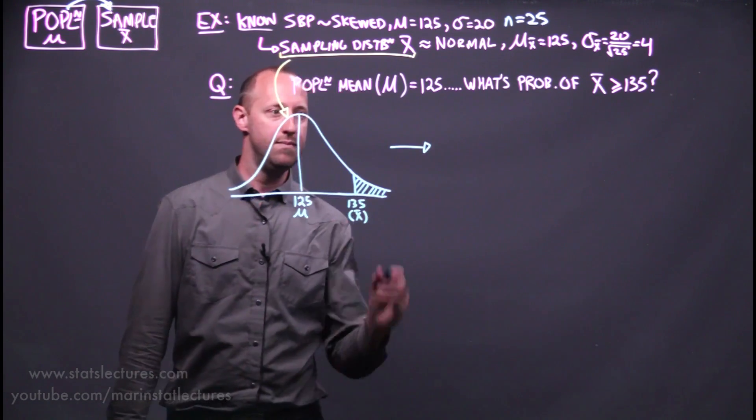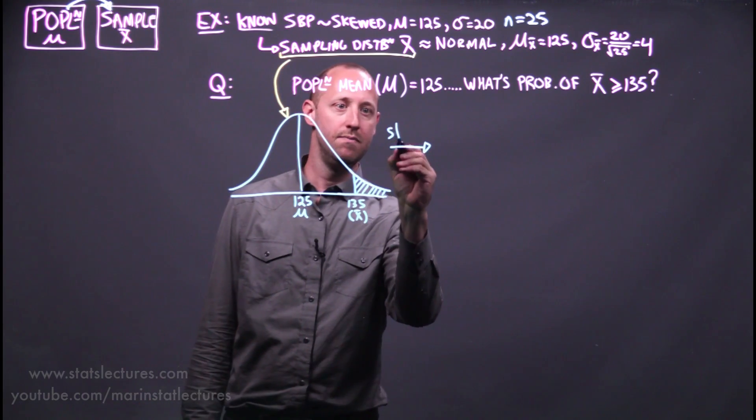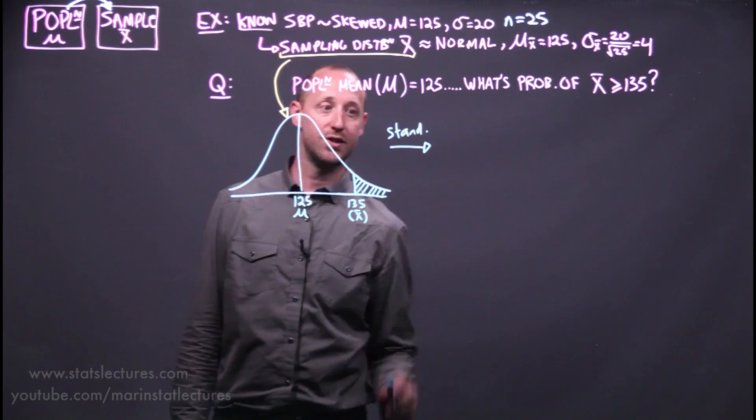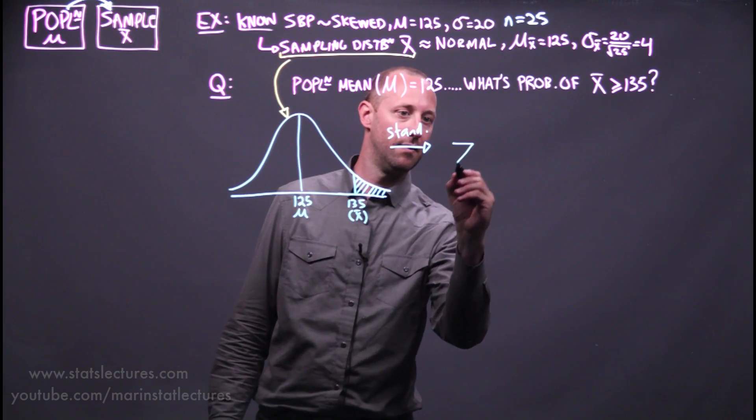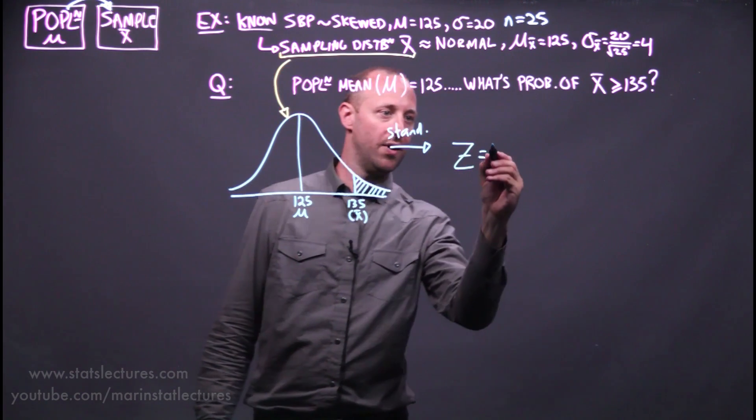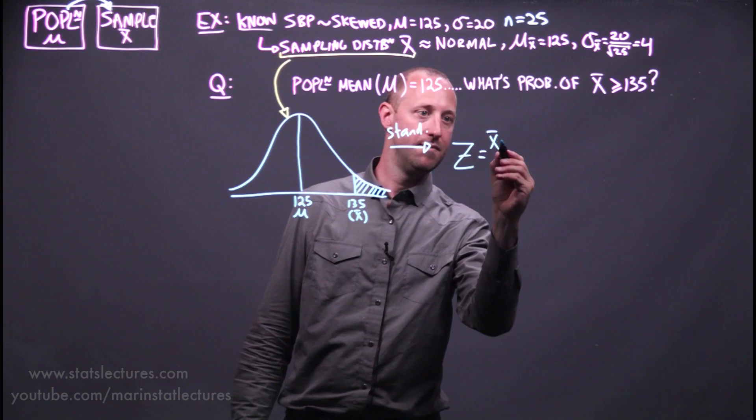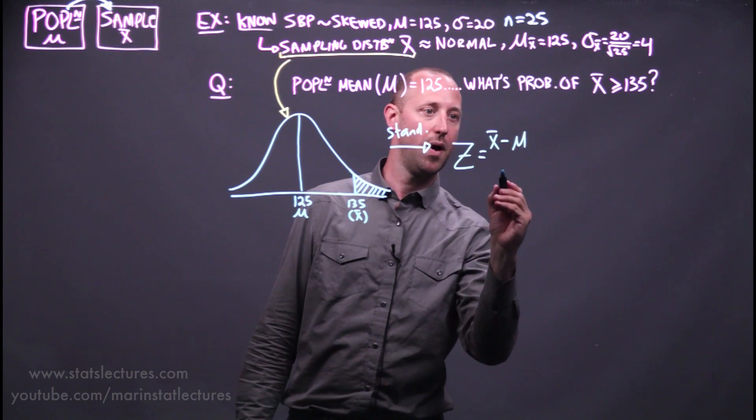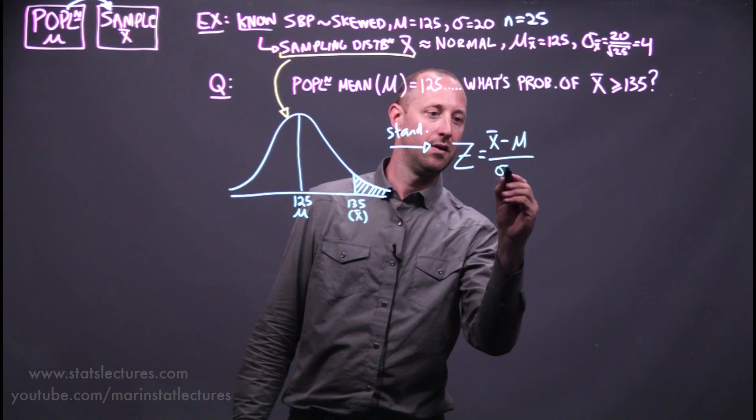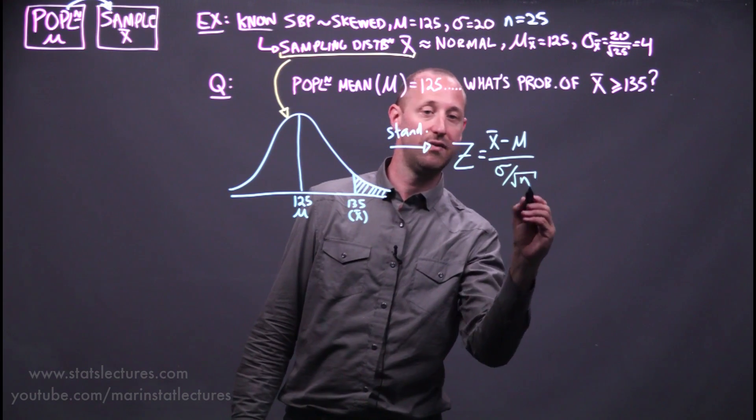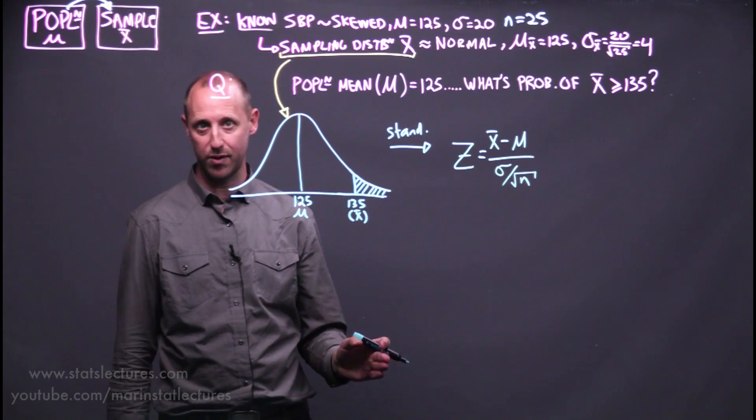We saw that this is approximately normal. So we can first start by standardizing. We can find out how far is that sample mean from the population's mean in terms of the standard deviation of the mean, what we're going to call a standard error of the mean, as soon as we start dealing with samples and not knowing the population.